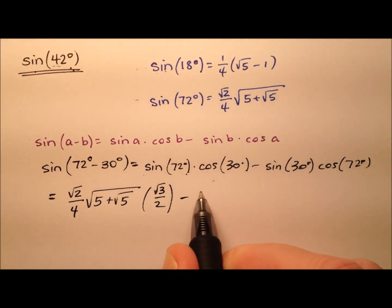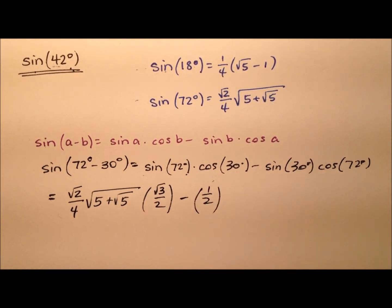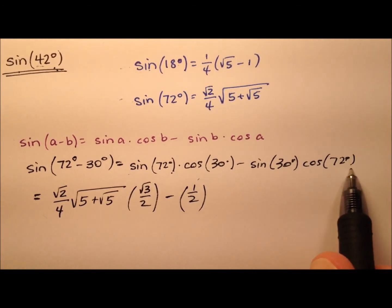And so minus the sine of 30 degrees, which is 1 half, times the cosine of 72.